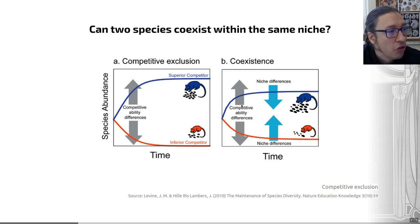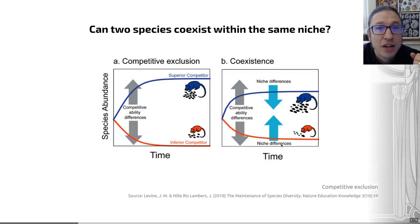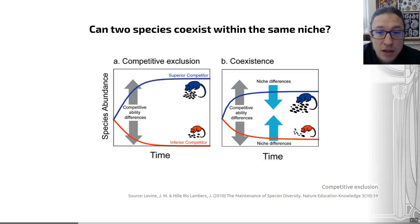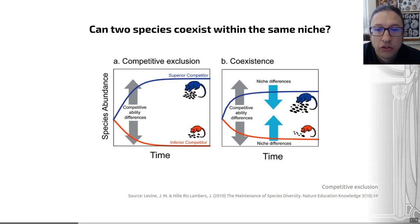On the right-hand side, however, there is a slight niche difference: the blue species generally consumes bigger seeds than the red one. That niche difference means they're consuming different resources. While competitive ability differences still exist, the red species can continue to survive despite competing for some — but not all — of the same food. Niche differences between species hinder competitive exclusion, helping to maintain species diversity.